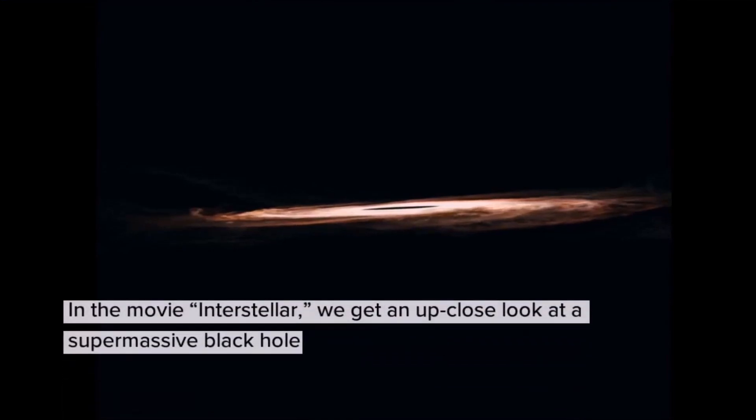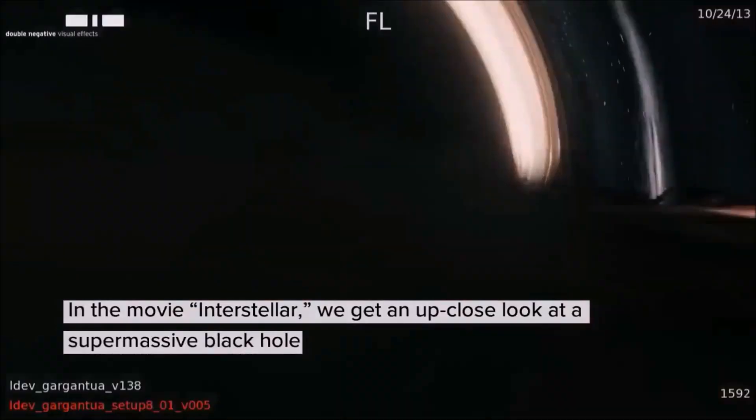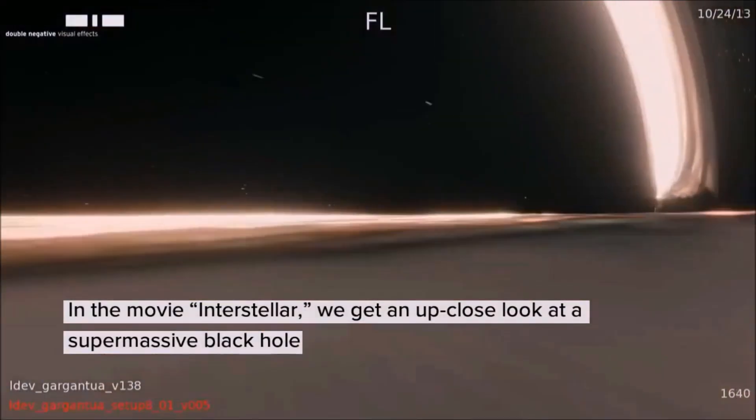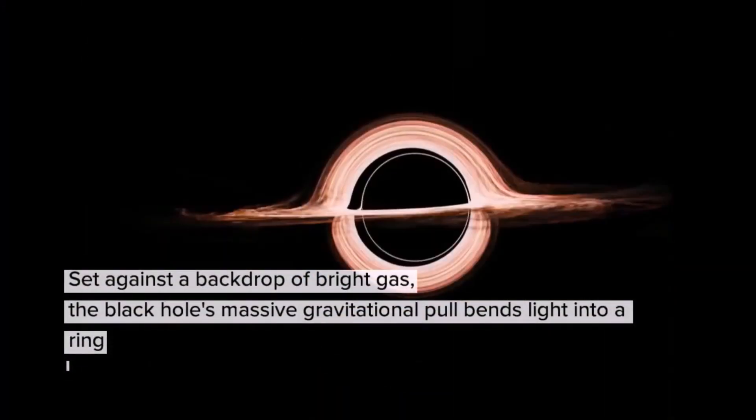In the movie Interstellar, we get an up-close look at a supermassive black hole set against a backdrop of bright gas. The black hole's massive gravitational pull bends light into a ring.